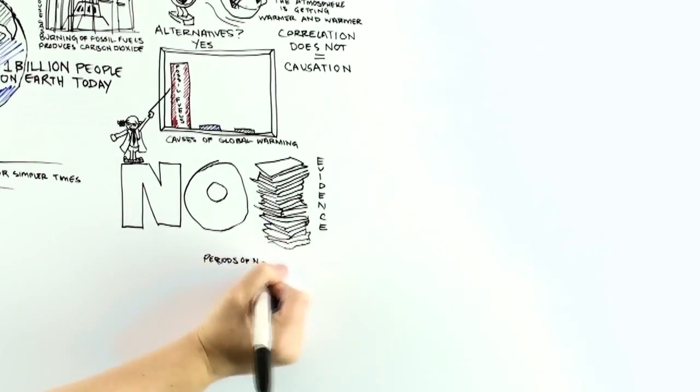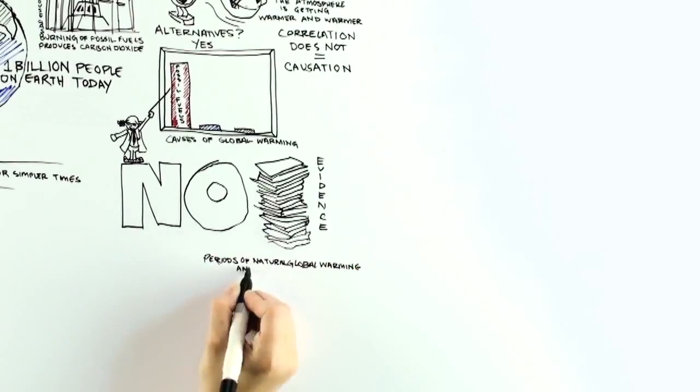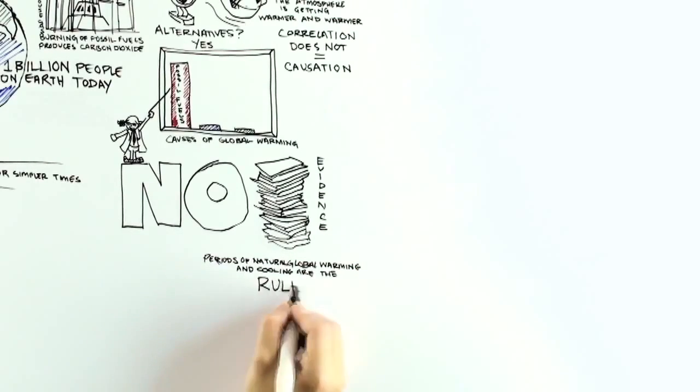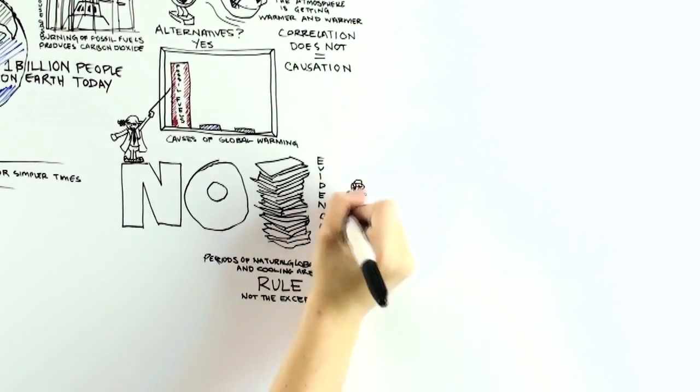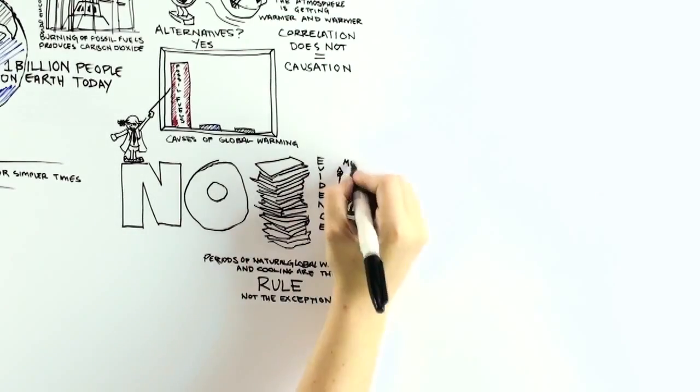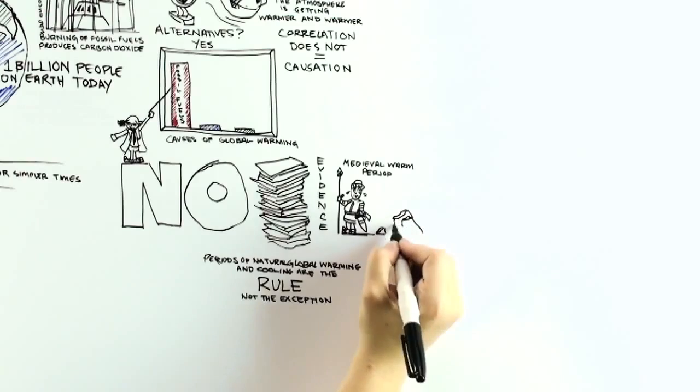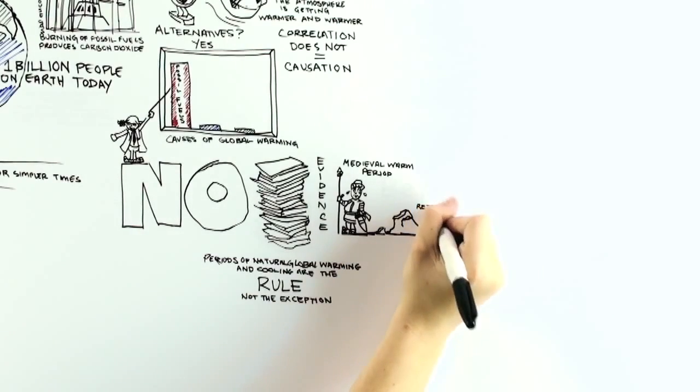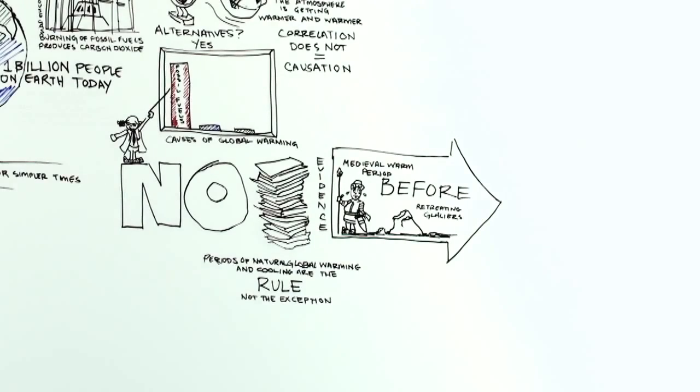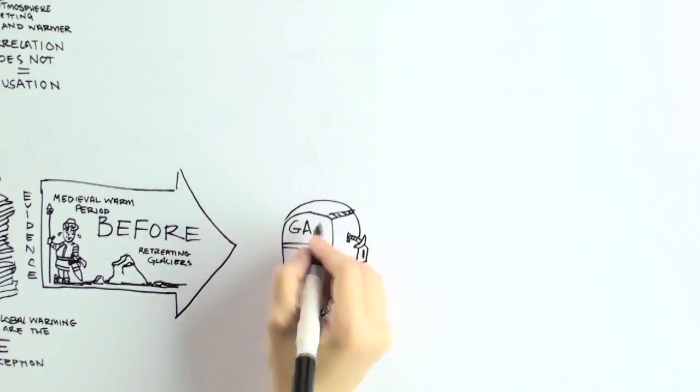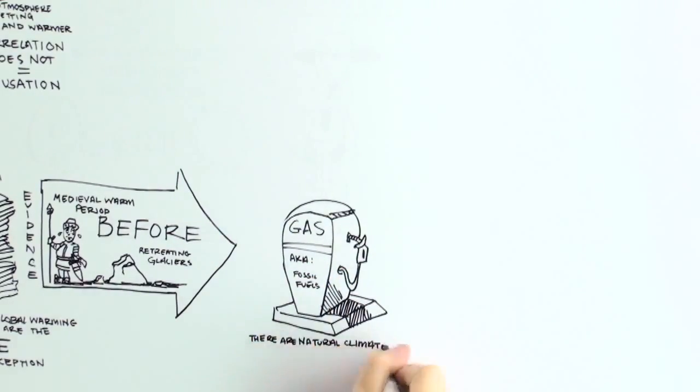Before global warming became the most popular climate research topic, most of the evidence that had been published over the years suggested that periods of natural global warming and cooling are the rule, not the exception. A number of indirect measures of past temperature, so-called temperature proxies, suggests that it might well have been warmer during some decades around 1000 AD, during the medieval warm period, than it has been recently. And since most of that warming, including retreating glaciers at the end of the Little Ice Age, occurred well before fossil fuel use could be blamed, there are indications that there are natural climate variations at work which are, as yet, not well understood.